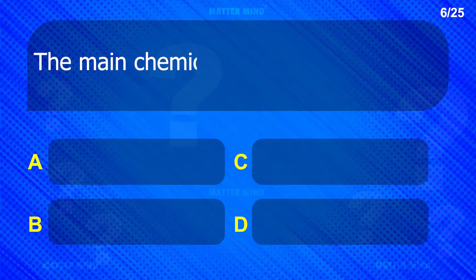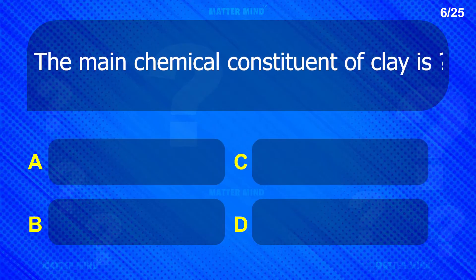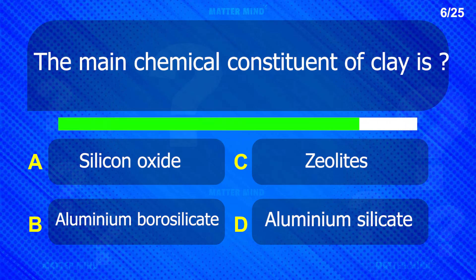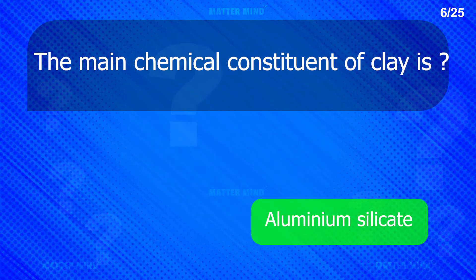The main chemical constituent of clays is: Aluminum silicate.